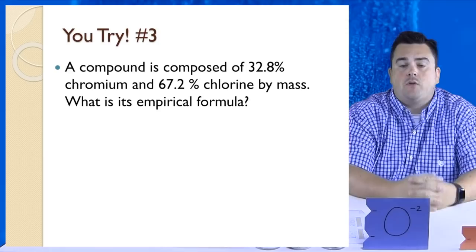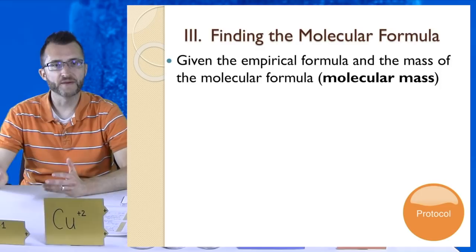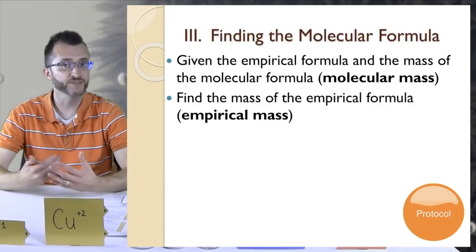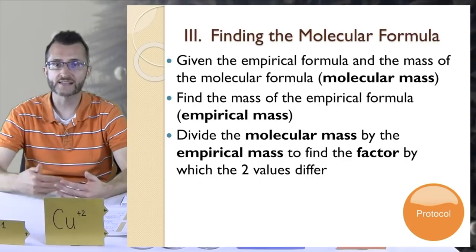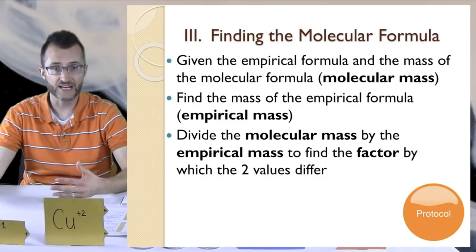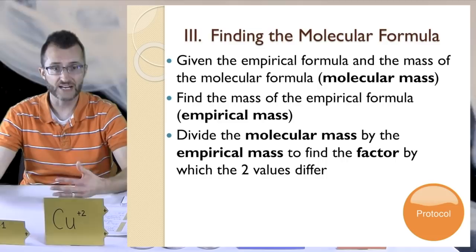Finding the molecular formula. Given the empirical formula and the mass of the molecular formula called the molecular mass, find the mass of the empirical formula first. That's called the empirical mass. Divide the molecular mass by the empirical mass to find the factor by which the two values differ. The molecular mass is going to be larger than the empirical mass. Multiply the factor by the subscripts in the empirical formula to find the molecular formula.